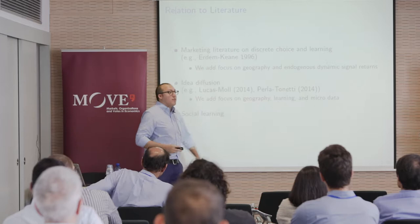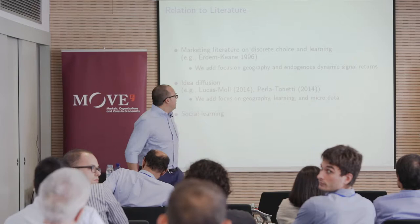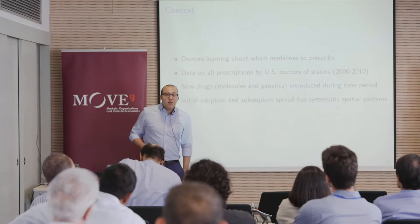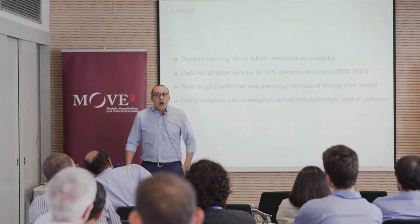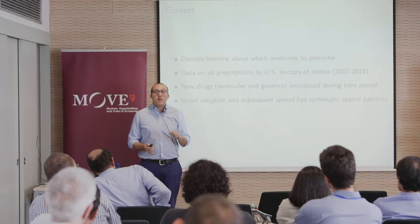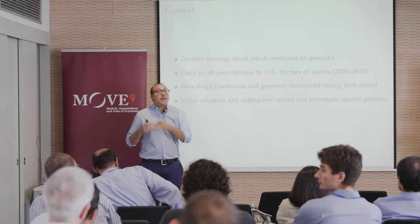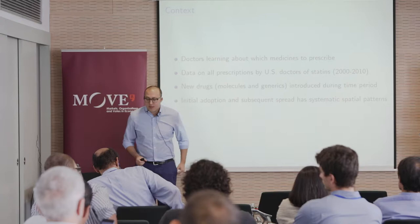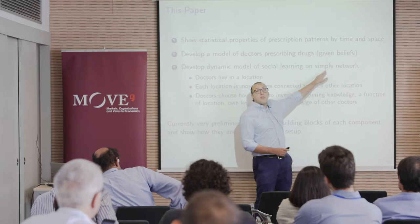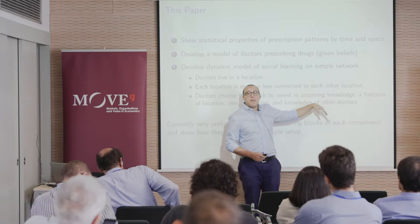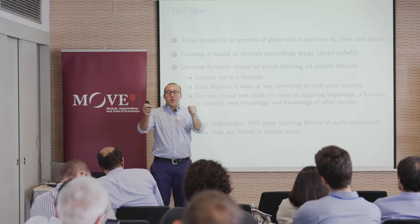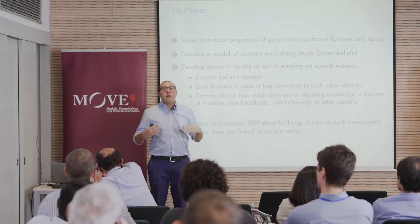On the question of what 'location' means: in the data, location is going to be a zip code in the United States—a geographic location. In the model, location is a point on a simple network. I'm going to draw on the trade literature and say two locations are two points connected by some distance. That distance affects economically important things—a bilateral link—and that's the level of detail until we get to the math.